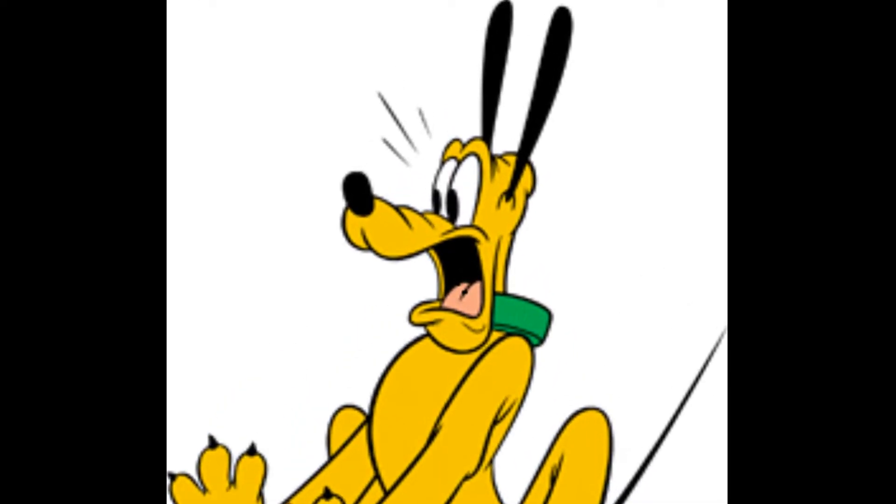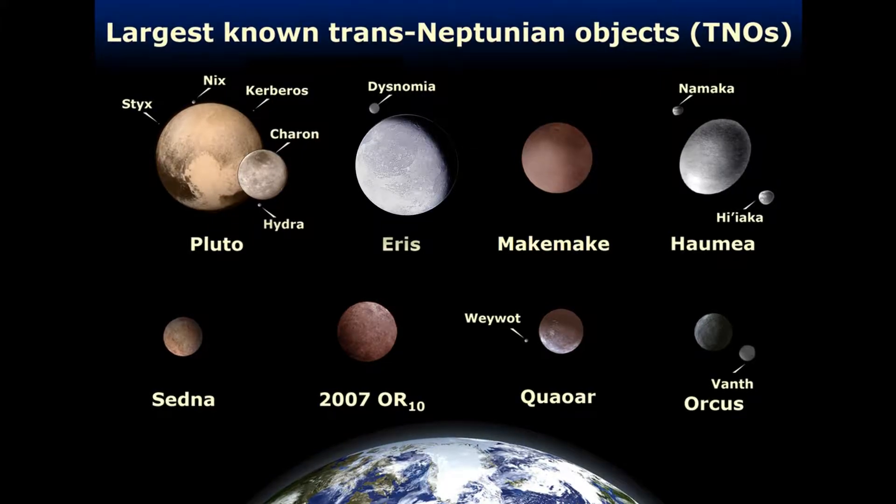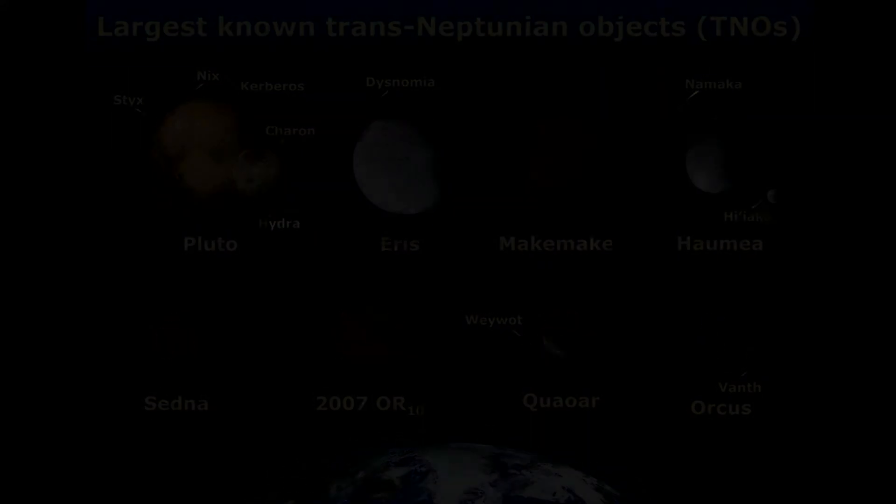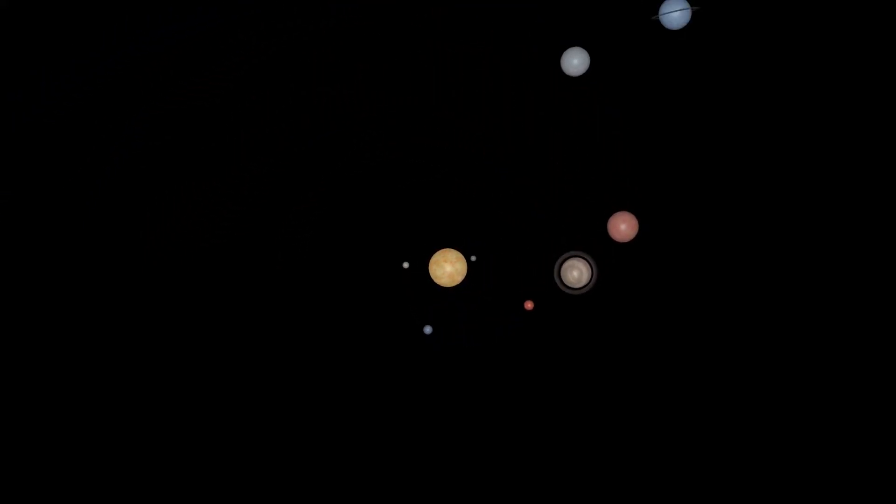Pluto has been demoted to the category of a dwarf planet because it's roughly the same size as the 200-odd other trans-Neptunian objects discovered in recent years, some of which seem to be affected by something with a mass greater than that of the Earth. This has led scientists from the UK and Spain to predict that we will discover at least two more large planets orbiting within the Kuiper Belt.